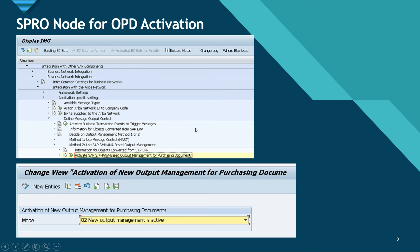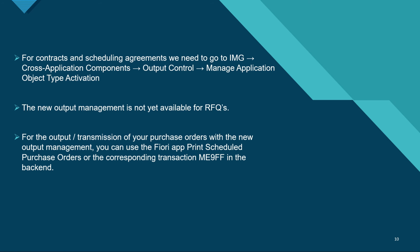Once you click on that SPRO node, a window opens where you can see the mode selection. If you want to activate the new output management, select the option 'New output management is active.' For contracts and scheduling agreements, go to the IMG screen, then Cross Application Components > Output Control > Manage Application Object Type Activation. Note that for RFQs the new output management is not available — you have to go with classical output management. For output transmission of purchase orders with the new output management, you can use the Fiori app 'Print Purchase Orders' or the corresponding backend transaction ME9F.